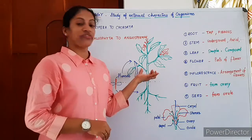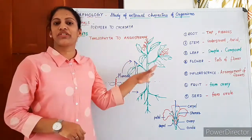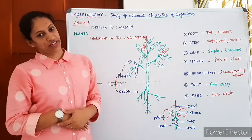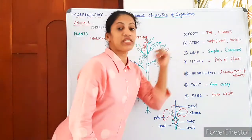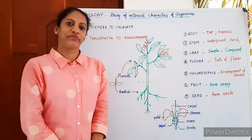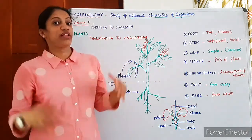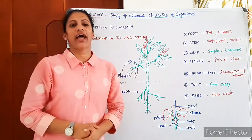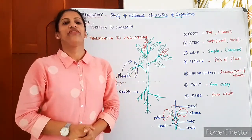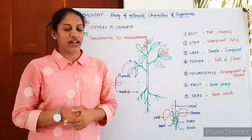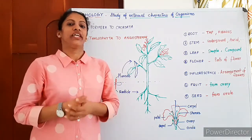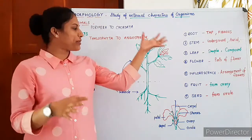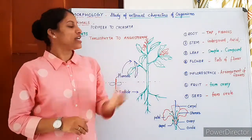The main duty of the stem is to transport materials uniformly to all parts. The next part is the leaf. The leaf has the most important significance in the plant body because it helps in photosynthesis.